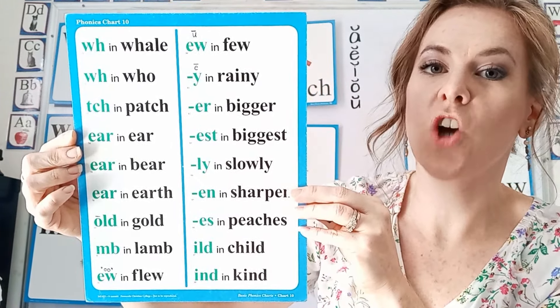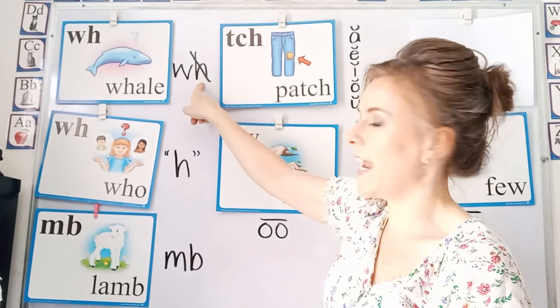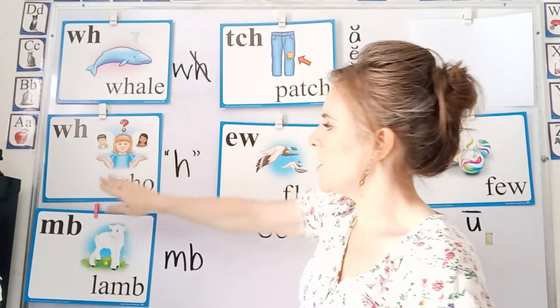Then we have our other WH special sound — the H in who — and it makes our H sound. So here we have whole, who's, whom, whoever, whoop, whosoever. WH in whale: the W is the sound, the H is silent. WH in who: the WH makes an H sound.